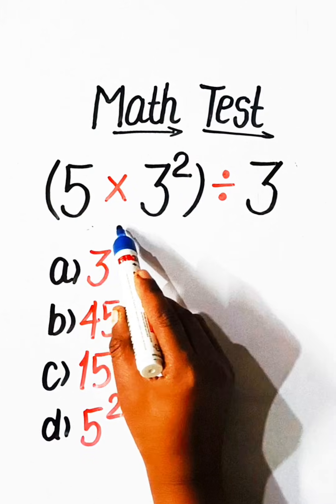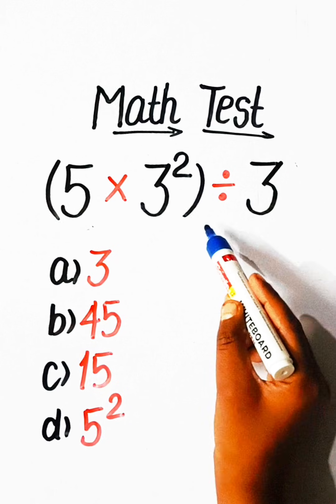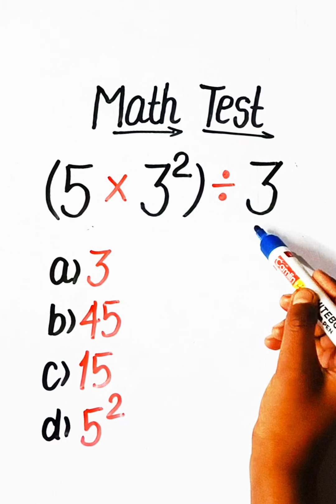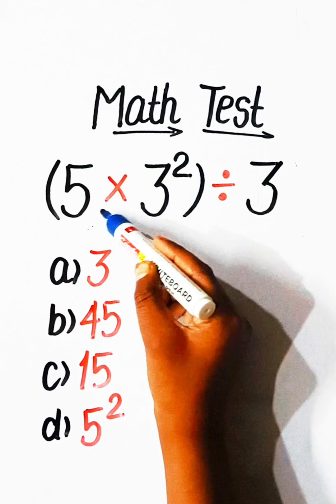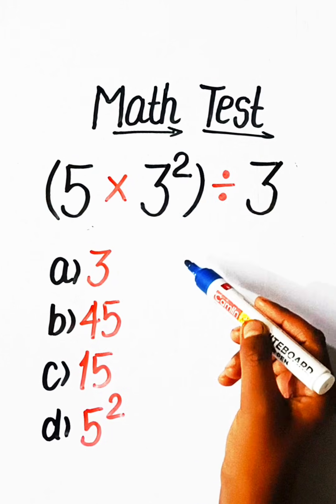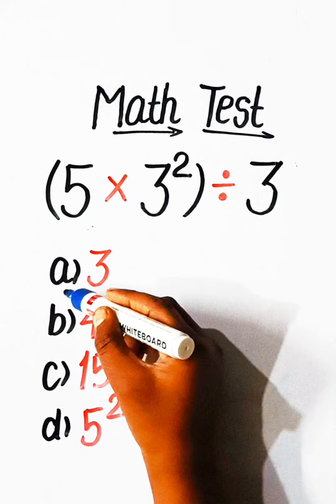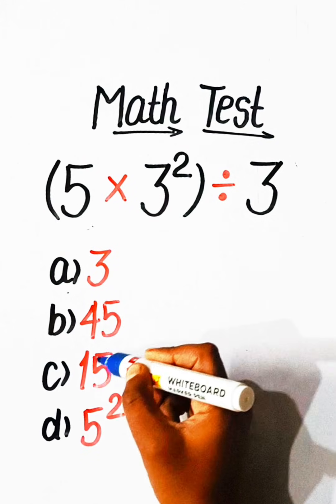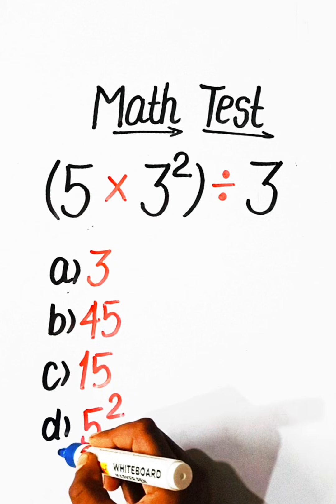Hello everyone, welcome back to my YouTube channel. In this video we will solve this basic math equation: 5 multiplied by 3 squared divided by 3 equals to what? Option A: 3, Option B: 45, Option C: 15, or Option D: 5 squared.